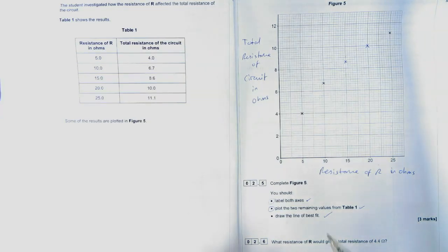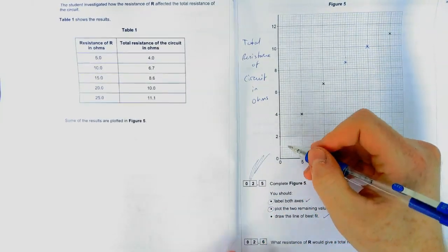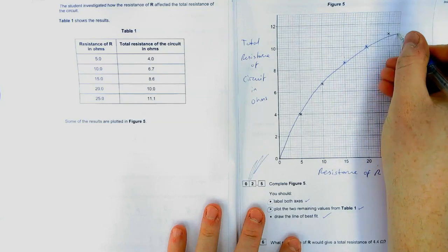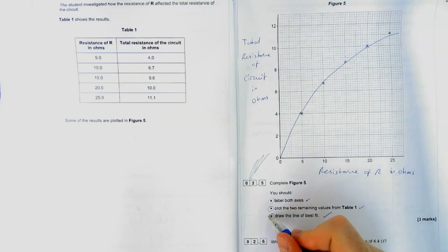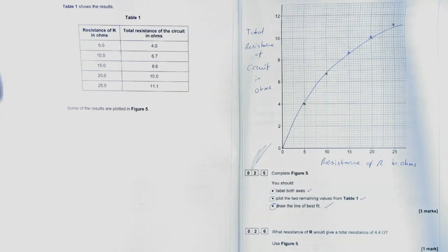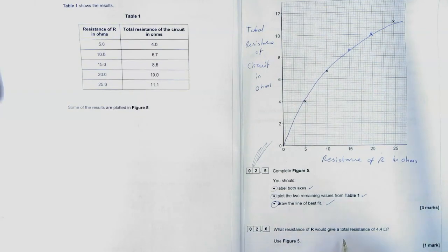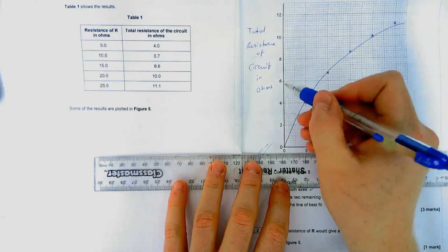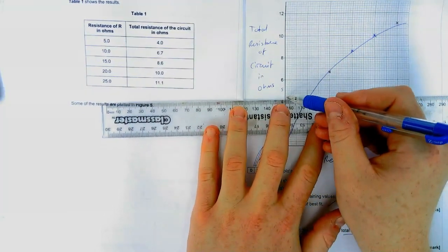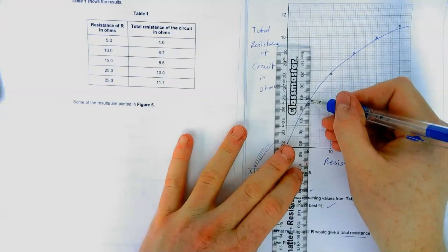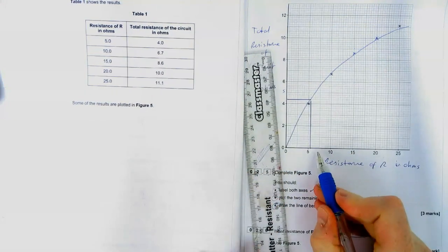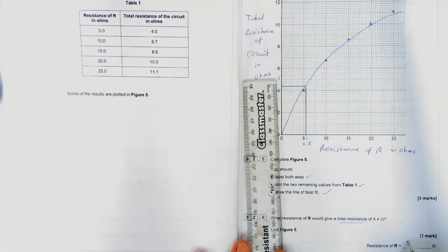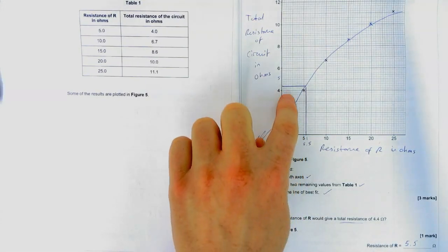From your line of best fit, find the resistance of R that gives a total resistance of 4.4 ohms. Draw a horizontal line from 4.4 on the y-axis across to the curve, then drop down to the x-axis. That works out to approximately 5.5 ohms. Even if your line of best fit isn't exactly like mine, as long as you use your ruler clearly and the reading matches your graph, you'll get the mark.